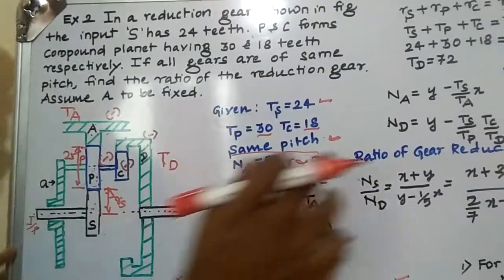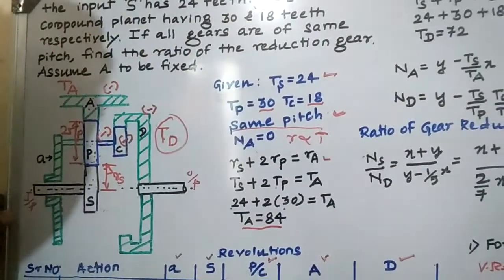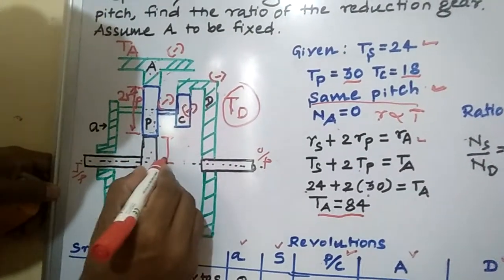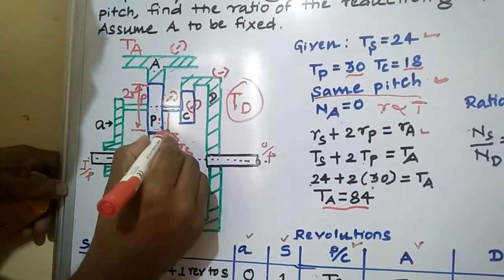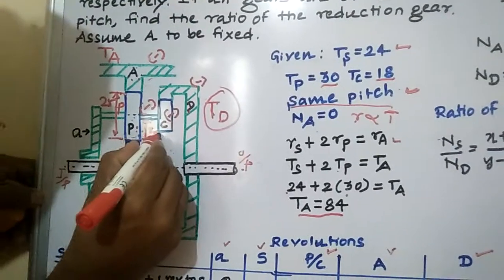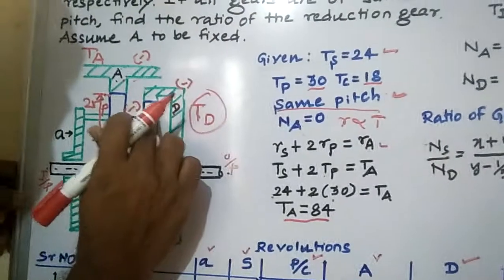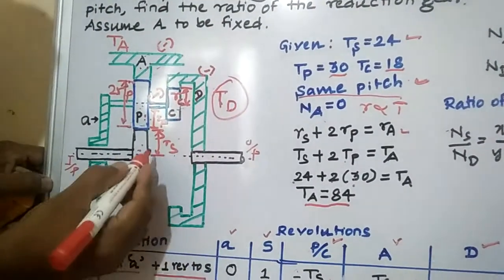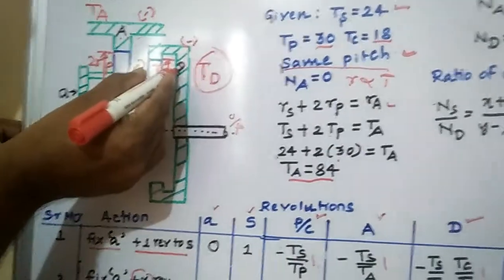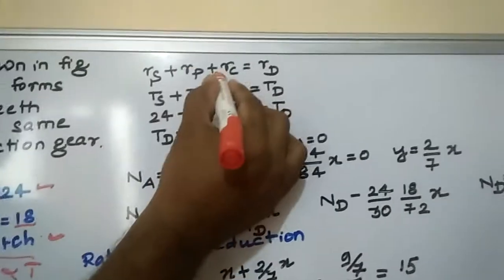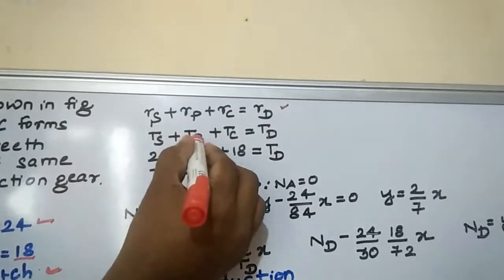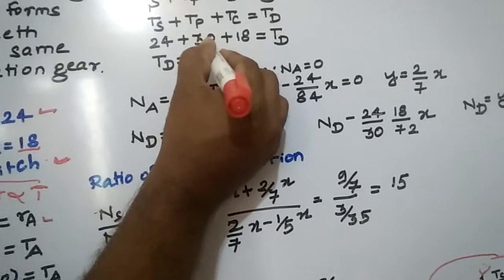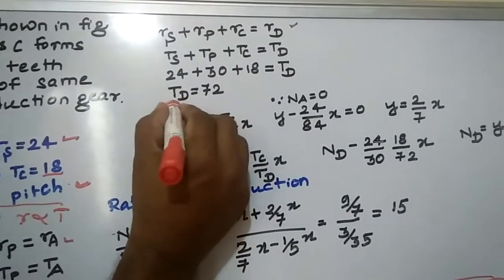Then come to TD — what is the number of teeth on D? Look at the geometry also. Using the same geometry concept: RS plus RP plus RC equals RD. Replacing radius with number of teeth: TS plus TP plus TC equals TD. Putting TS equals 24, TP equals 30, TC equals 18, you will get TD equals 72.